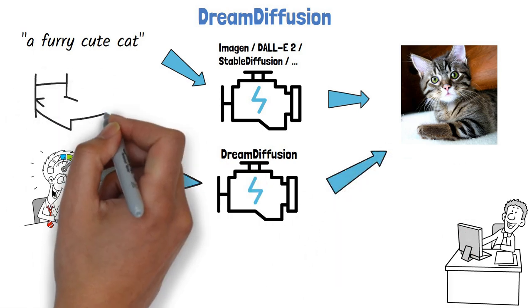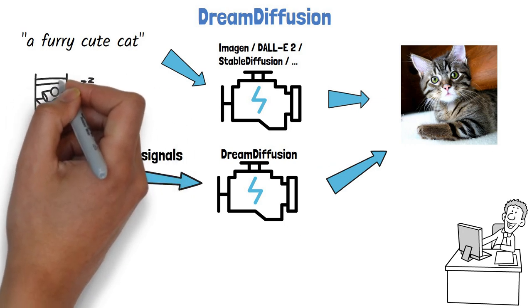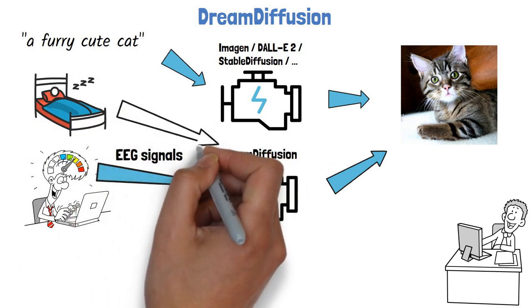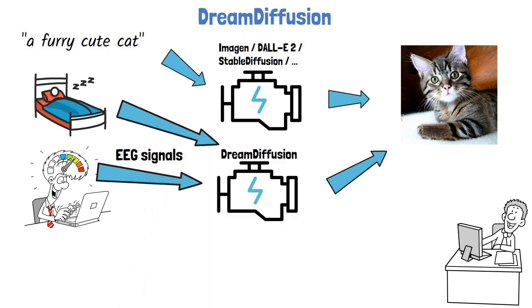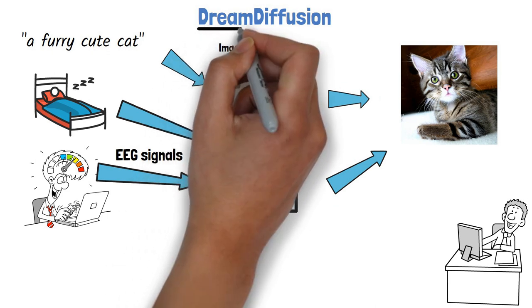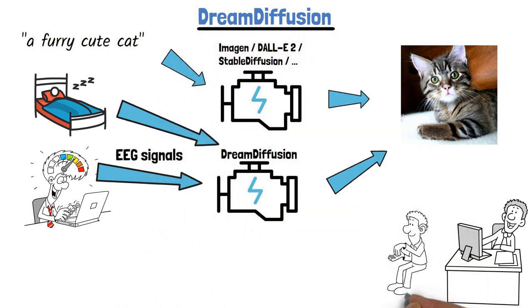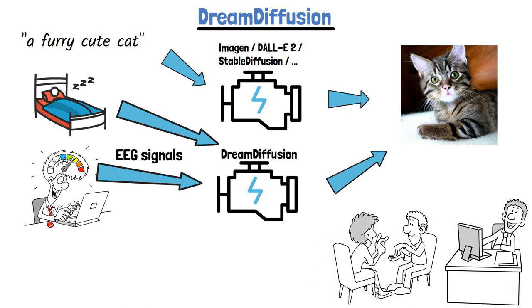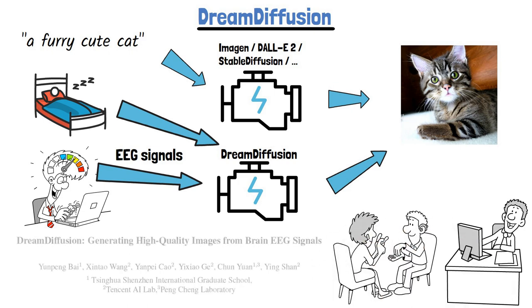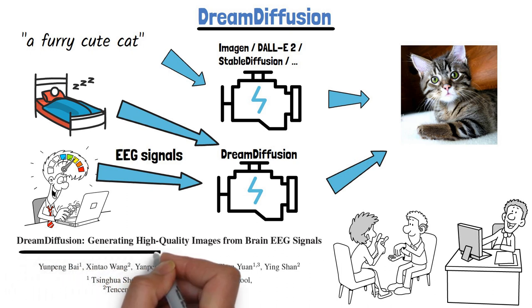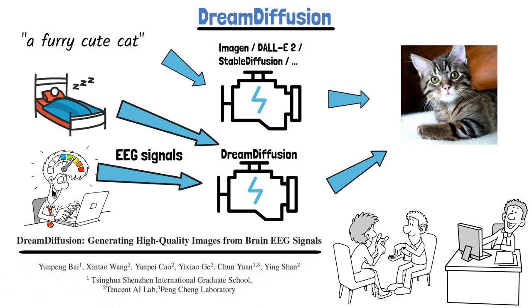Think about it — you can record your brain while sleeping and use Dream Diffusion to visualize your dreams, that's just crazy. And from here comes the source for the name Dream Diffusion. Moreover, it may help people with language disabilities to express themselves. Dream Diffusion was presented in a research paper titled 'Dream Diffusion: Generating High Quality Images from Brain EEG Signals'.